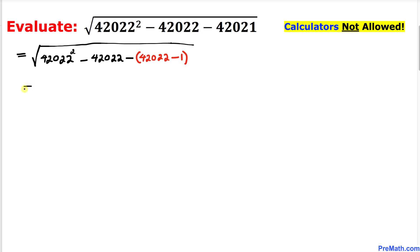Here's our next step. Let's go ahead and simplify furthermore. So we can write this one: 42022 squared minus 42022, and let's go ahead and distribute this negative sign. So that is going to give us negative 42022.